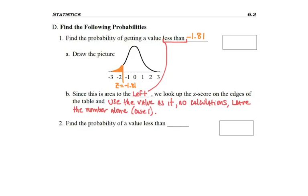So I shaded my area to the left. I go to my table to find the negative 1.8 from the first two digits on the left. And since that last digit's a 1, I'm looking for 0.01 on the top. And I found 0.0351 in the middle of the table. That's my area or my probability.